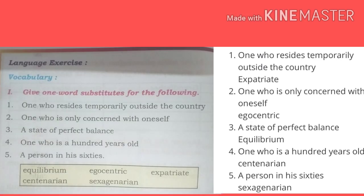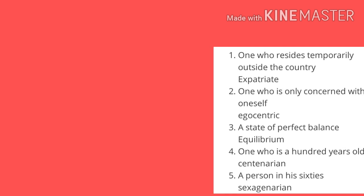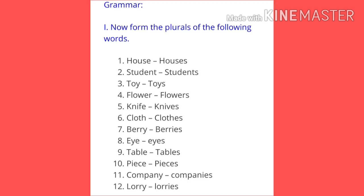Language exercise — vocabulary. Give the one-word substitute. One who resides temporarily outside the country is called an expatriate. One who is only concerned with oneself is egocentric. A state of perfect balance is called equilibrium. One who is a hundred years old is a centenarian. A person in his sixties is a sexagenarian. Grammar: form the plurals. House — houses; students — students; toy — toys; flower — flowers; knife — knives; cloth — clothes; berry — berries; eye — eyes; table — tables; piece — pieces; company — companies; lorry — lorries. Every word ending in Y becomes IES; others just add S.